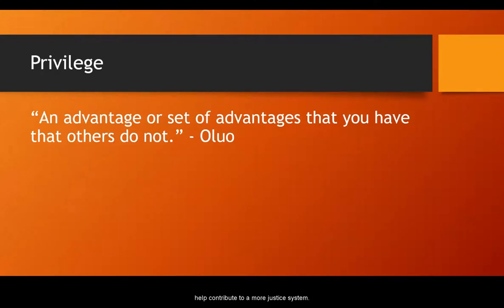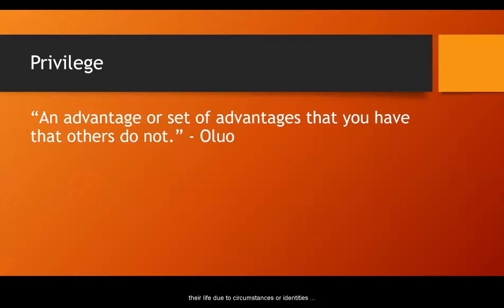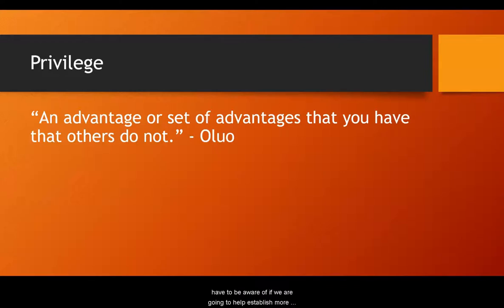Another really key term is the issue of privilege. Privilege is an advantage or set of advantages that you have that others do not. Privilege can be a really touchy issue because everybody has hardships in their life due to circumstances or identities that may not have anything to do with race, but some of our identities and life situations afford us privileges that we have to be aware of if we are going to help establish more just classrooms and education systems in society.